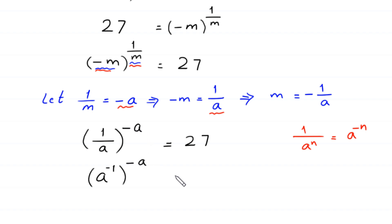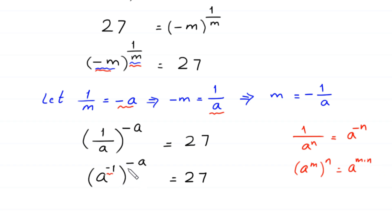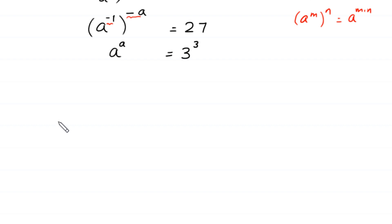According to the property of exponents, 1 over a to the power n equals a to the power negative n. So 1 over a equals a to the power negative 1. The equation becomes a to the power negative 1, whole to the power negative a, is equal to 27. Multiplying the powers: negative 1 times negative a gives positive a, so a to the power a is equal to 27, which we write as 3 to the power 3. Comparing base and exponent, it is obvious that a is equal to 3.